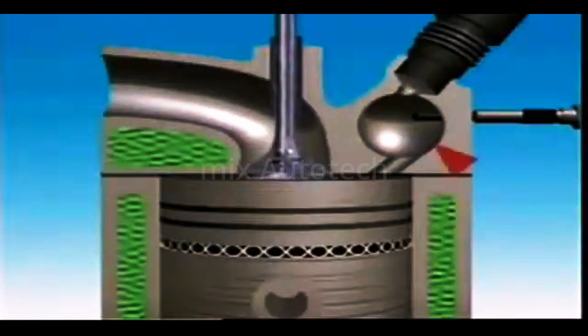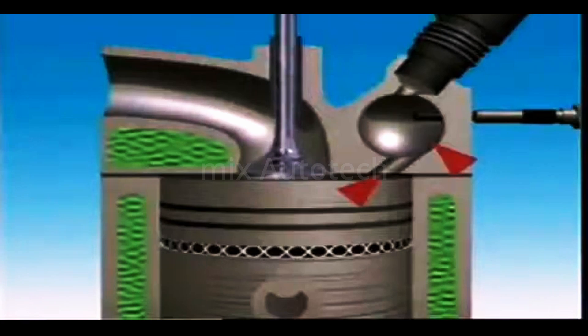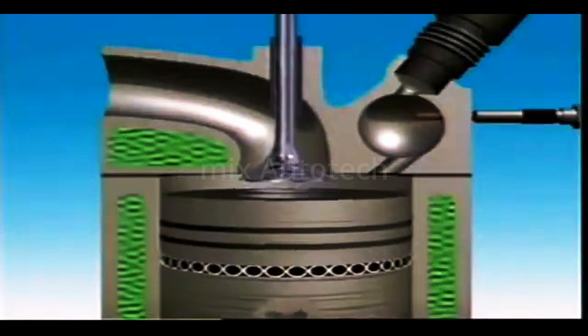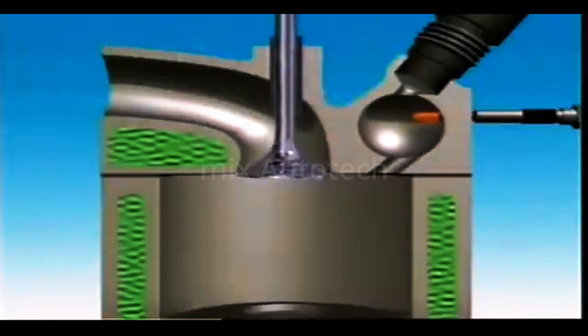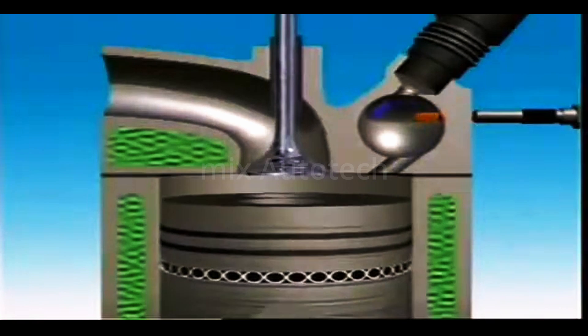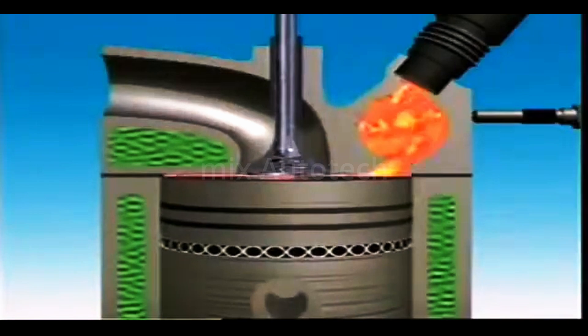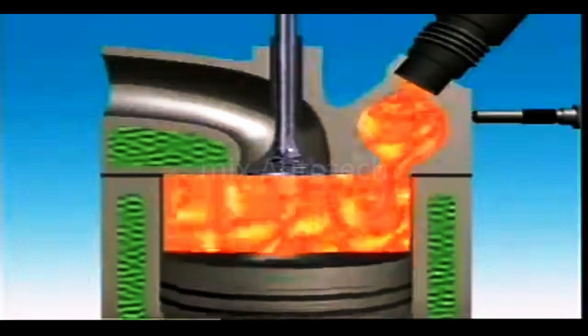This is a swirl chamber. It's spherical and connected to the main chamber by an angled passage. Both the injector and glow plug are screwed into the head. The glow plug preheats the air inside to help start the engine. During compression, the spherical shape makes the air swirl in the chamber. This helps make a better mixture of the air and fuel, which improves combustion.